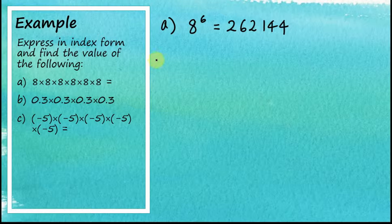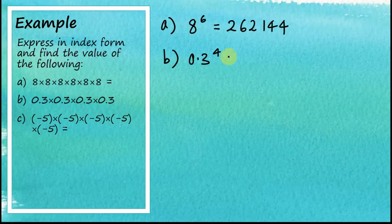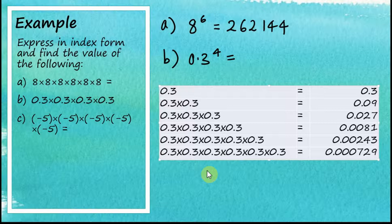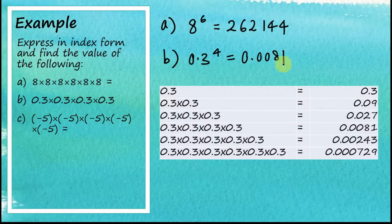For part b, we are asked to find 0.3 multiplied by itself four times. In index form, we write this as 0.3 to the power of four. You can use your calculator for this — I have done this using Microsoft Excel. When 0.3 is multiplied by itself four times, it is equal to 0.0081.